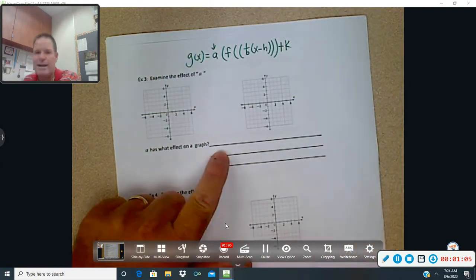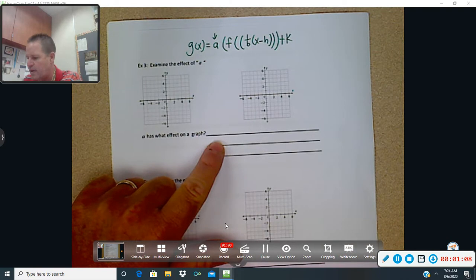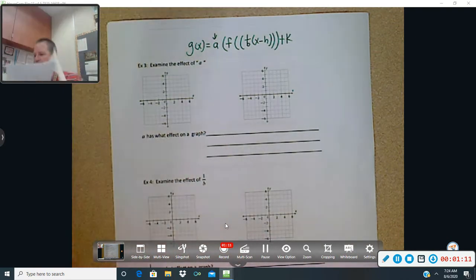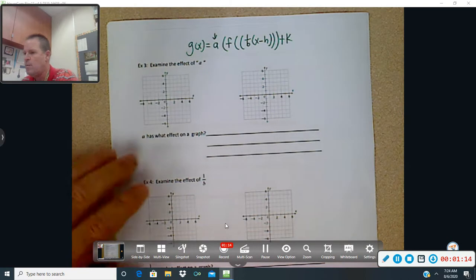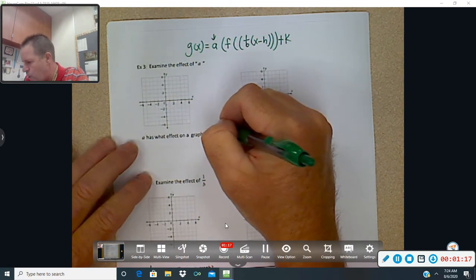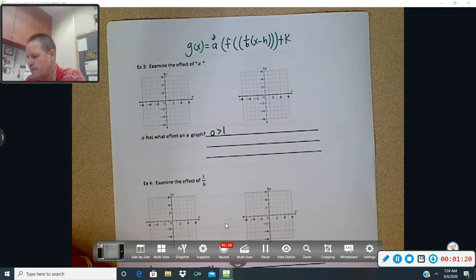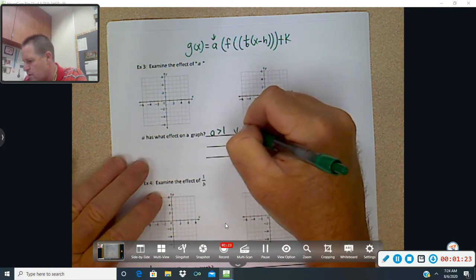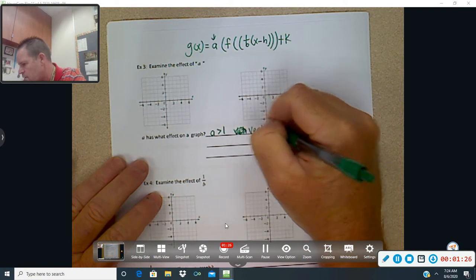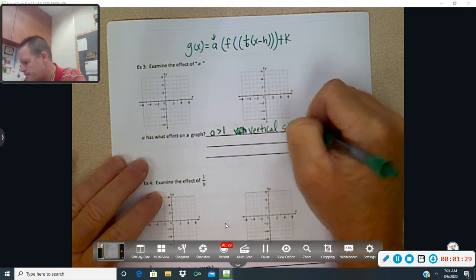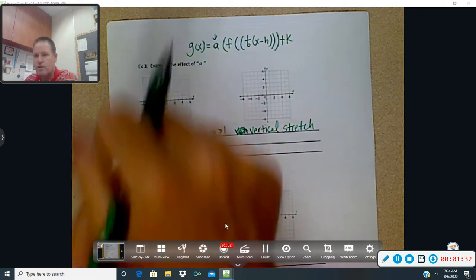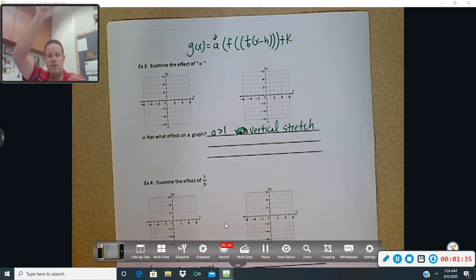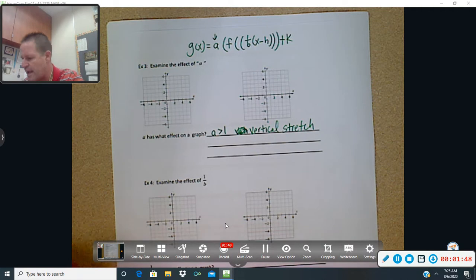And I'm actually going to go down here right now and write down what a does so that we have it, OK? What effect does a have on the graph? Well, if a is greater than 1, it's going to be a vertical stretch. OK, so we're going to vertically stretch it out. That means we're going to stretch it up and down. So you're going to take something and stretch it up. Just think what would happen to anything that you would stretch up. It probably is going to get narrower as you stretch it up, OK, if a is greater than 1.